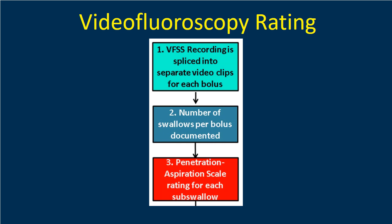The first three steps in the rating procedure are clipping or splicing the video, then counting the number of swallows per bolus, and then assigning a PAS score to each swallow. If a patient swallows more than once, they would have more than one PAS score. At the bolus level we look for the worst score across swallows for that bolus, and at the participant level we summarize with the worst PAS score seen across all boluses delivered in that consistency.